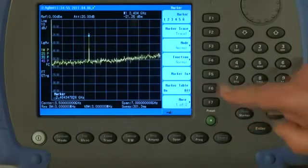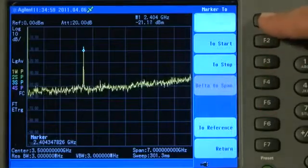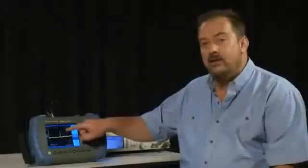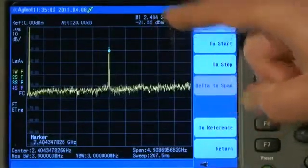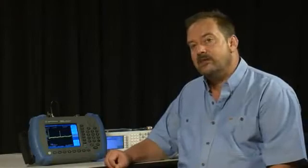And I can then press the Marker button and press Marker 2, Center Frequency. So that has now tuned that 2.4GHz signal to the center of the screen. You can see here it says 2.404GHz. So it is roughly in the center of the screen and I did not need to know what the frequency of it was.